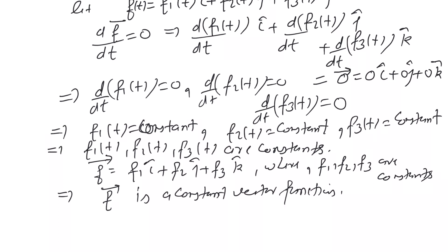So in this theorem we have proved that the necessary and sufficient condition for a vector function to be constant is that df/dt = 0. In this lecture we have gone through one theorem and the definition of constant vector. Very soon I will be with you with two more important theorems on vector functions. If you like the video please like, subscribe, share, and comment. This is Dr. Rajesh saying goodbye — thank you very much for watching.